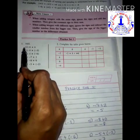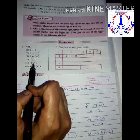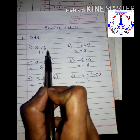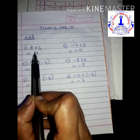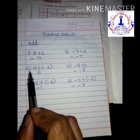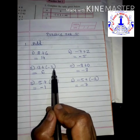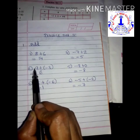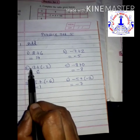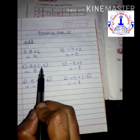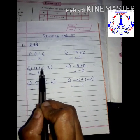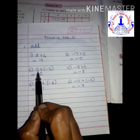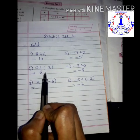In Practice Set 5, the first question asks you to add the given numbers. First one is 8 plus 6 — both numbers are positive, so 8 plus 6 is 14. Next one is 9 plus minus 3. Here one is positive 9 and the other is negative 3, so subtract 3 from 9: 9 minus 3 is 6, giving positive 6.